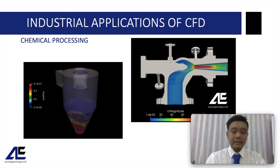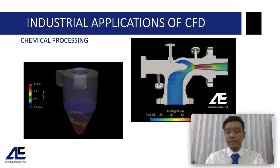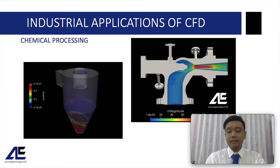For chemical processing industries, which are very closely related to fluid flow problems, CFD is widely used to predict the root cause of issues such as erosion in a valve, or to predict cyclone separator efficiency when changing operating conditions or particle properties.